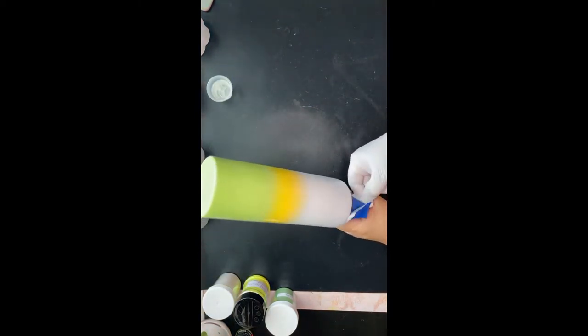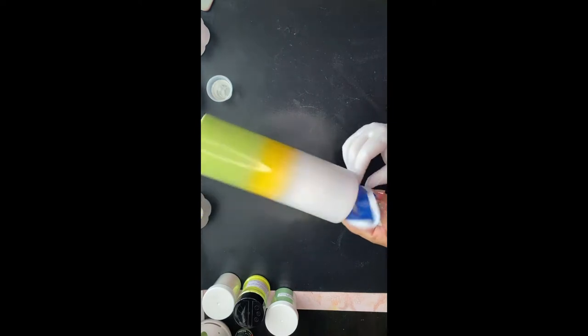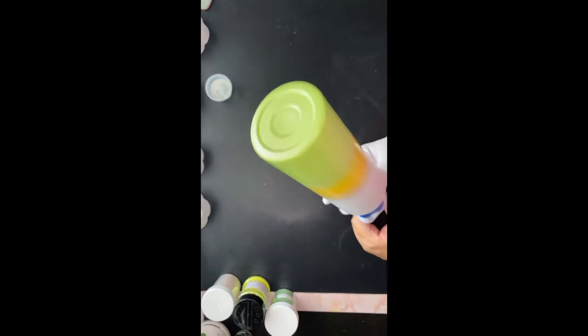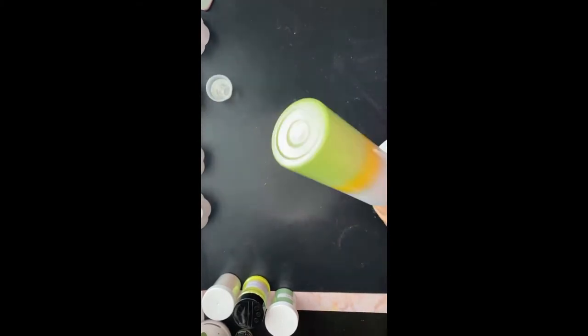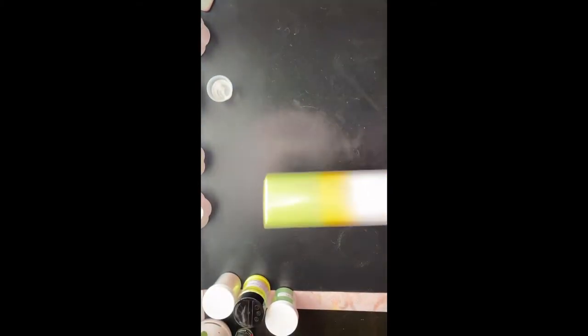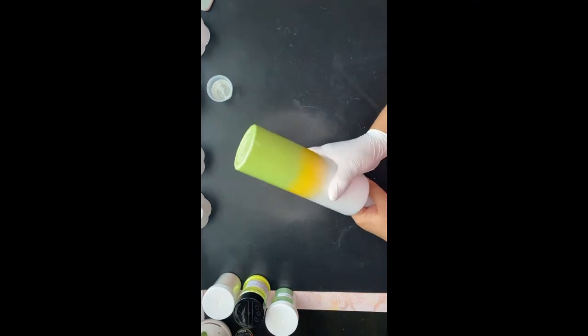I'm going to be removing the painter's tape from the inside rim of my tumbler. I placed this there prior to spray painting to help catch any overspray and keep the inside of the tumbler cleaner for less cleanup later in the process.